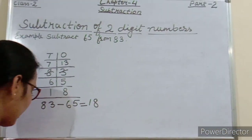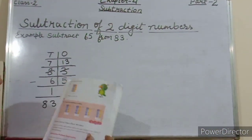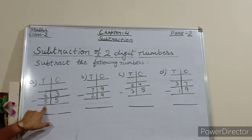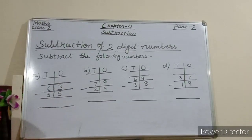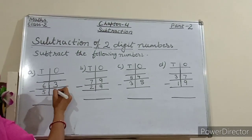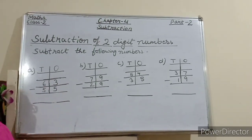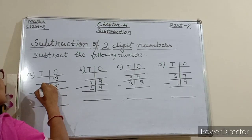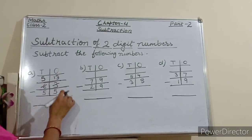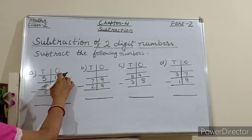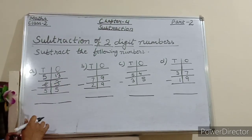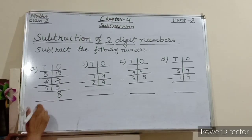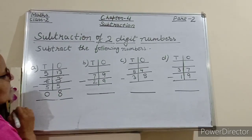Now students, some questions I am giving you from your book — Checkpoint 2. Students, subtract the following numbers. We have to subtract 55 from 63. So 3 minus 5 is not possible. So we will borrow from 6 — this 3 will become 13 and 6 will become 5. Now 13 minus 5 is equals to 8. And 5 minus 5 is 0. So here we write 0.